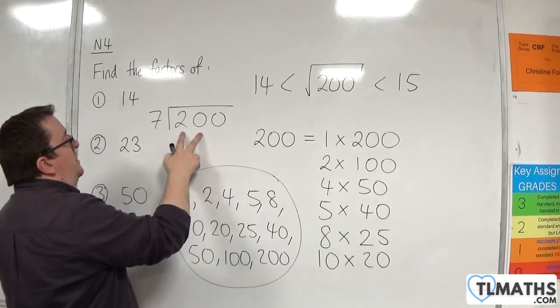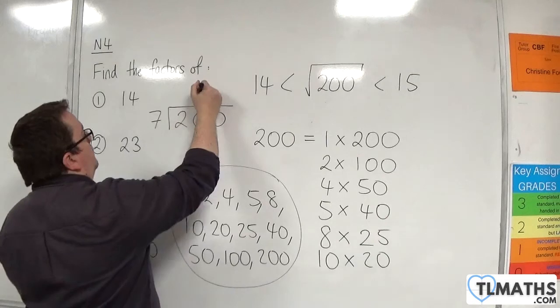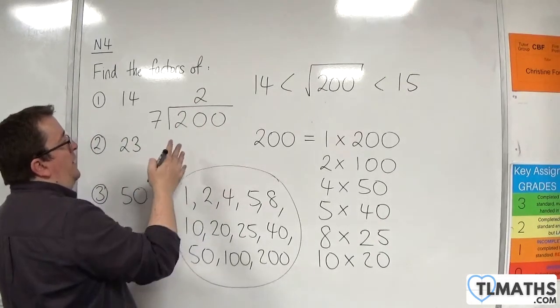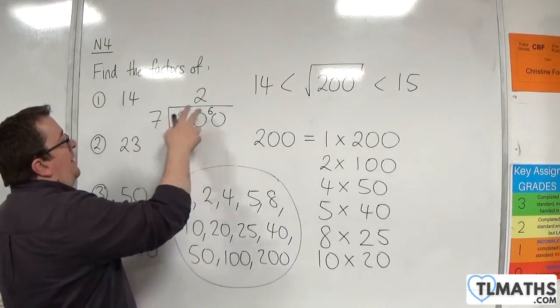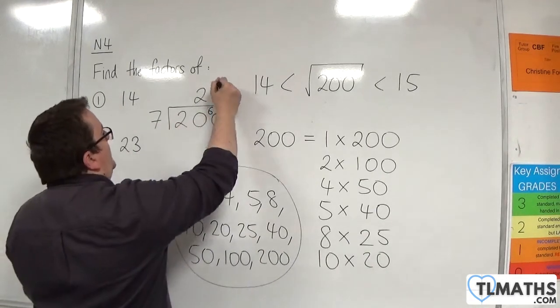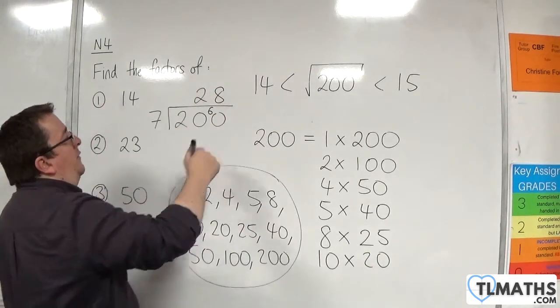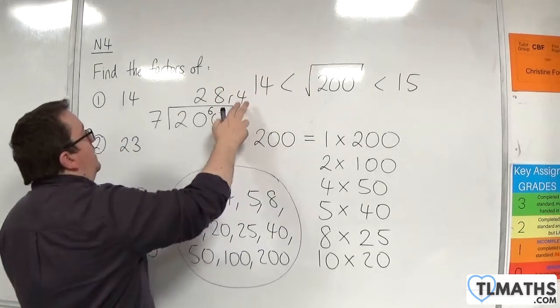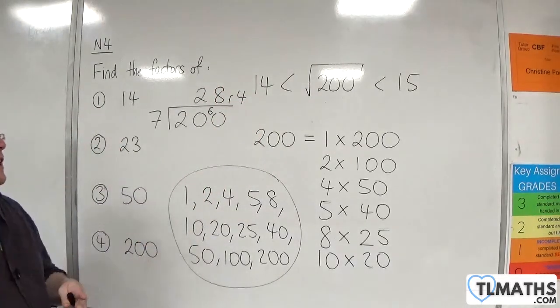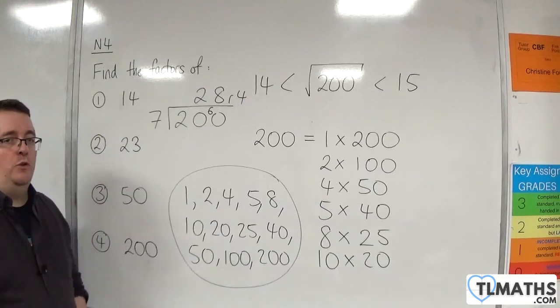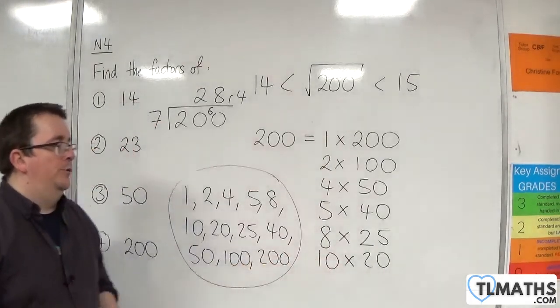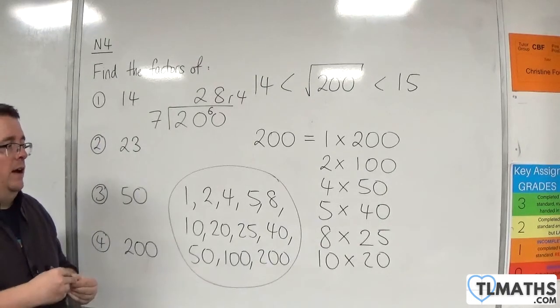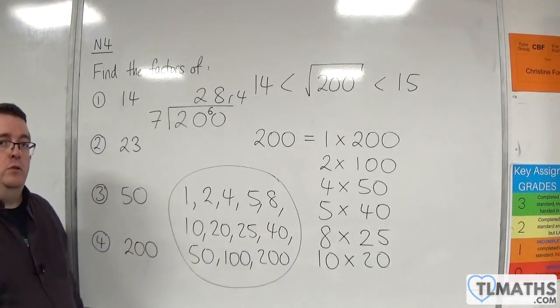7's into 20 go 2. So, that gets me up to 14. That gives me 6 remainder. 7's into 60 go 8. 7 8s is 56. Remainder 4. Now, because the remainder isn't 0, that's telling me that 7 doesn't go into 200. So, you could always utilize short division in order to find them if you needed, if you wanted to check one and you were unsure.